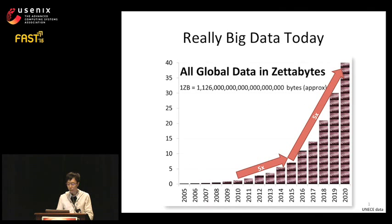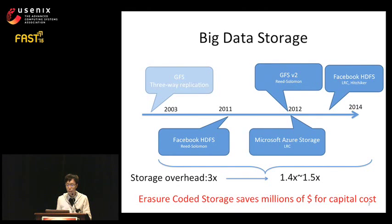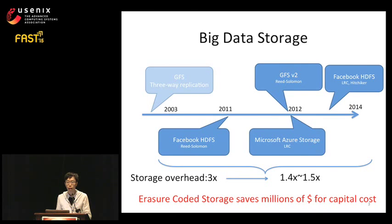Nowadays, the global data is growing enormously. We have seen a data growth rate of 5x to 6x over the past five years, and this trend will likely continue into 2020, where we expect it to reach 40 zettabytes globally. Back ten years ago, when the Google File System was first introduced, three-way replication was the standard method to provide data reliability. However, this scheme ended up with a storage overhead of 3x. Nowadays, because of storage overhead pressure, most systems have transitioned to erasure coding to provide low storage overhead, bringing it down to between 1.4x and 1.5x. This saves millions of dollars in capital costs for storing data.